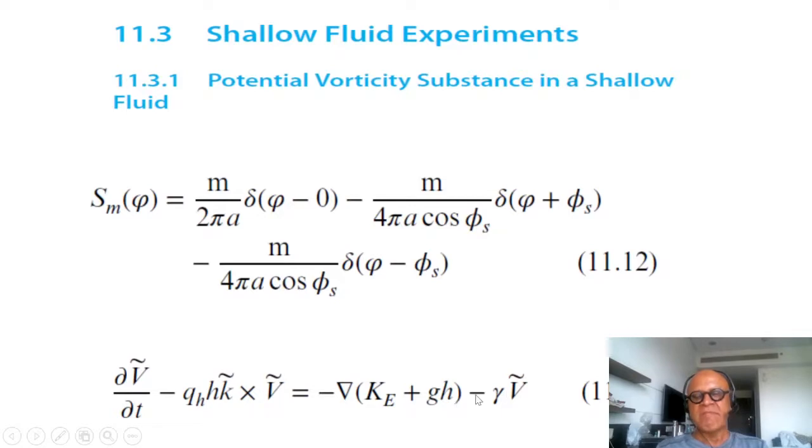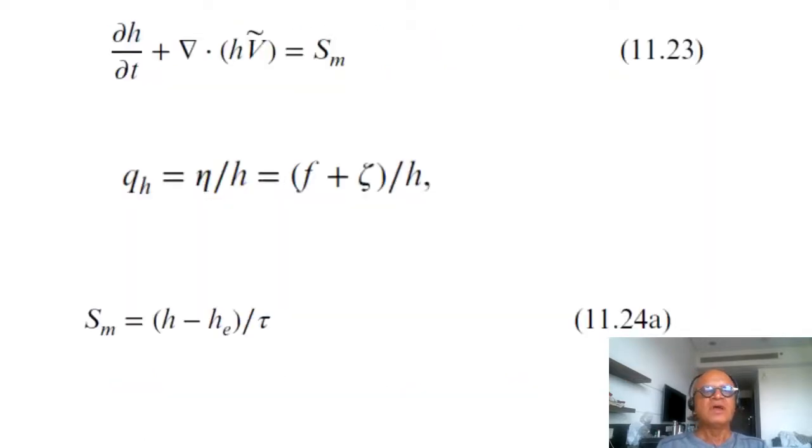Minus gamma V tilde where we are again writing friction in a simple form. The mass continuity equation in this case is del H del T plus the divergence term equal to the mass source sink. The vorticity, now potential vorticity in this case is theta or h which is our original definition, if you remember, zeta plus beta y divided by h.